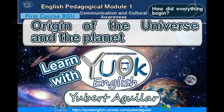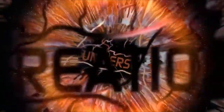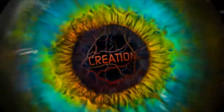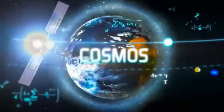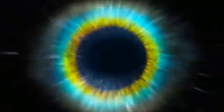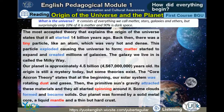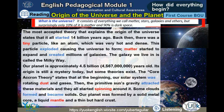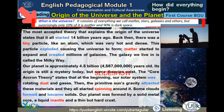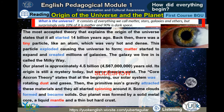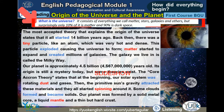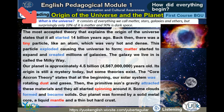Origin of the Universe and the Planet. What is the Universe? It consists of everything we call matter, stars, galaxies and others, but surprisingly only 10% of it is matter and 90% is dark space.